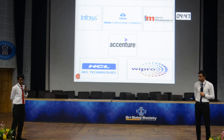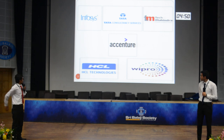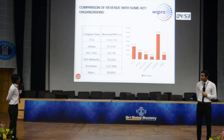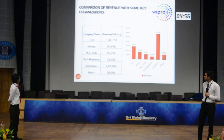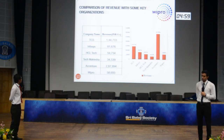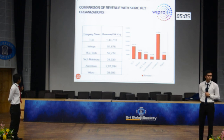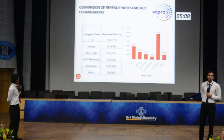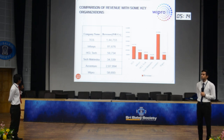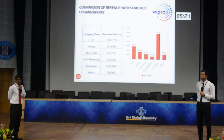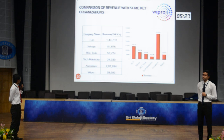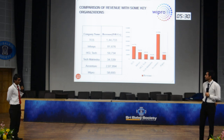These are some of the key competitors of Wipro and their revenues. TCS had a revenue of 1,44,733 crores in 2019. Infosys had 81,676 crores, HCL Technologies 59,734 crores, and Tech Mahindra 34,539 crores. Accenture, one of the biggest players in the IT industry in India, had a revenue of 2,87,894 crore rupees. Wipro had a revenue of 58,693 crore rupees.